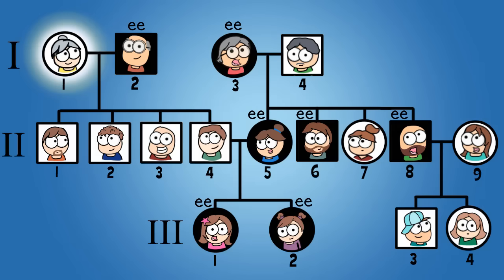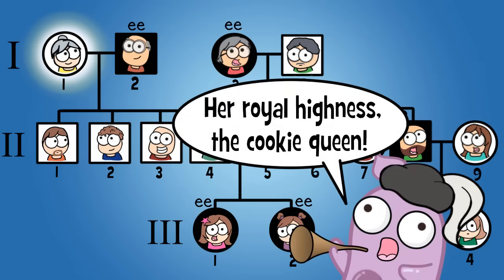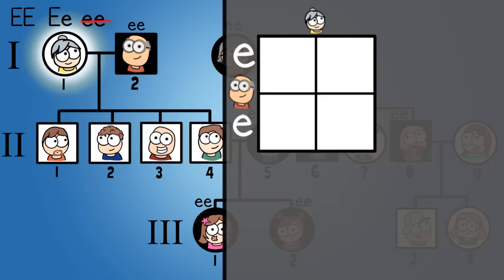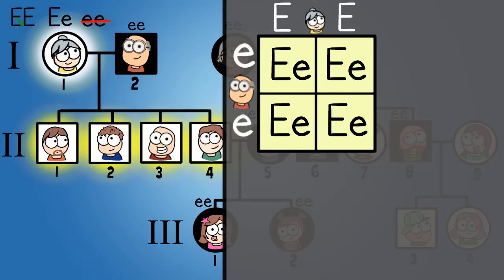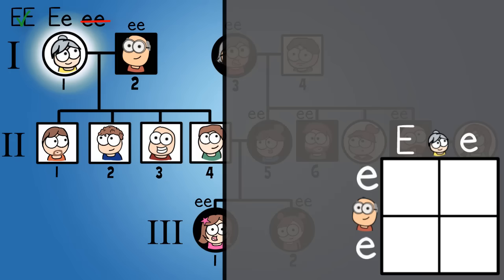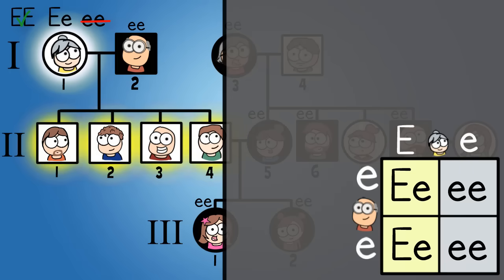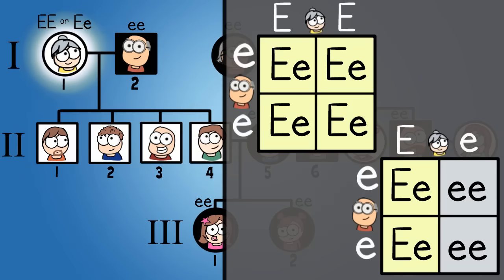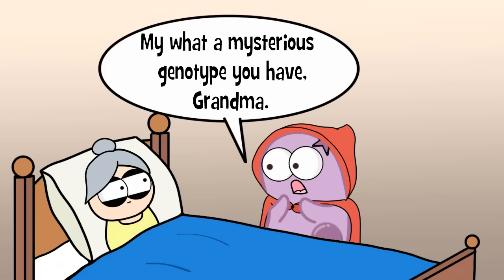Now take a look at generation 1, individual 1—that would be my paternal grandmother. What's her genotype? We know it's not little e, little e, or her shape would be shaded. But if we went with big E, big E, could that still work? Yes, all the offspring could get a big E from her and a little e from my grandfather. But what about big E, little e? Would that work too? Yes, because the children could still get a big E from her and a little e from my grandfather. It may be less of a probability, but it's possible and therefore we must list both: that she is big E, big E or big E, little e, because we don't know.